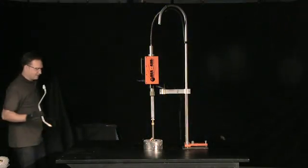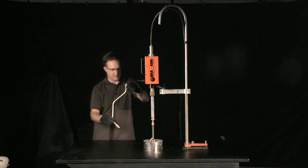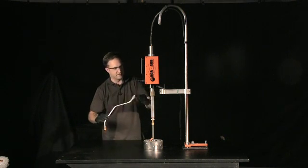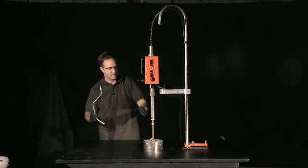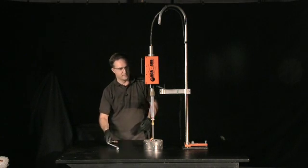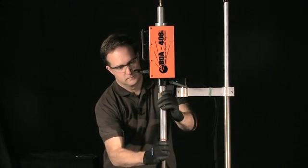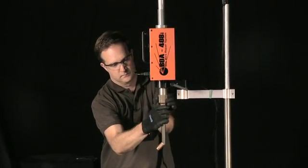Now I'll demonstrate the installation of the OD gun, or outside diameter welding gun, onto the BOA 408. First, we need to remove our ID gun. First thing I'll do, move our extension tube up.